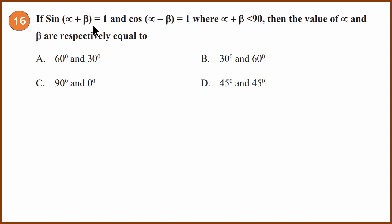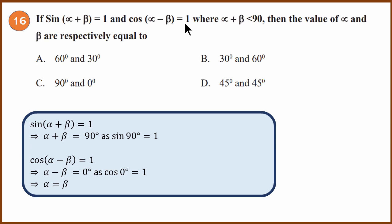Sixteenth question: key angle question. If sin(α + β) = 1 and cos(α − β) = 1, find the values of α and β. Since sin 90° = 1, we get α + β = 90°. Since cos 0° = 1, we get α − β = 0°, meaning α = β. Checking the options, the only solution where α equals β is D. The answer is D.